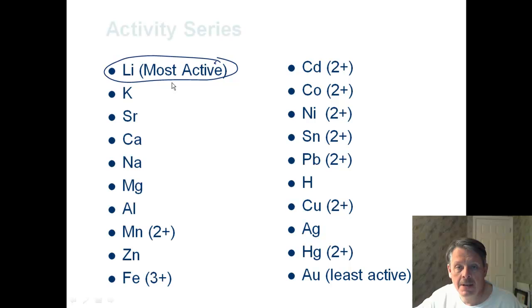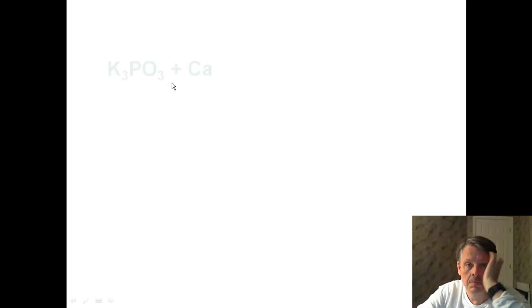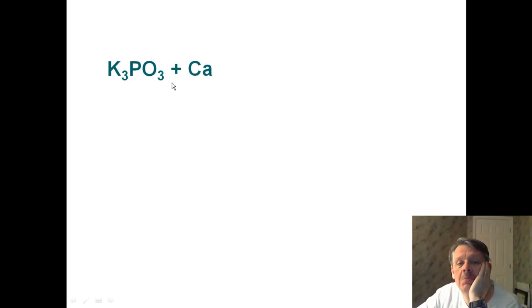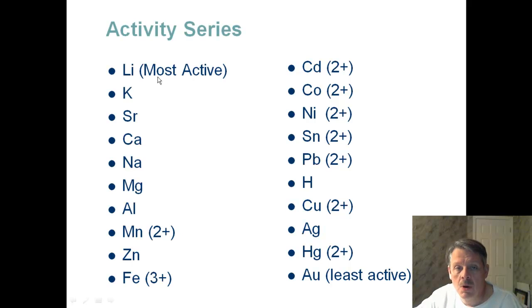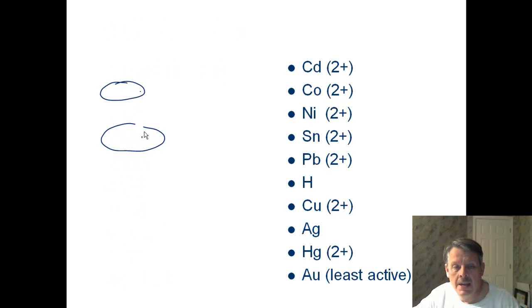All right, how about the next one? The next one says potassium phosphate and calcium. Does this reaction happen? Pause the video, see what you think, and then come back. Well, we have potassium, and we have calcium, so we look on our activity series. Oh, we see the potassium is higher than calcium, so the anion would rather be with potassium.